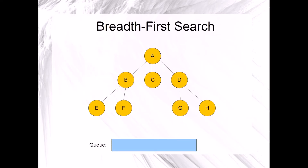Let's take a look at the algorithm in action. Here we have a tree-like graph with vertices A through H. Initially, they are colored orange to indicate that all of the vertices are marked. At the bottom of the image you see a blue-shaded region labeled Q. This is where we will keep track of the vertices entering and exiting the queue. Let's get started.